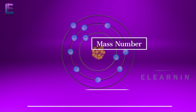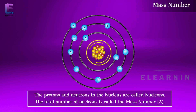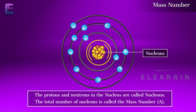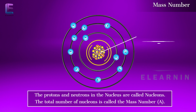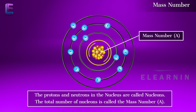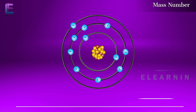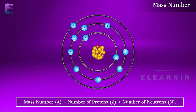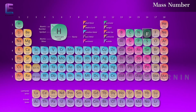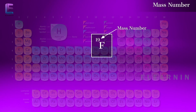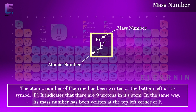Mass number: the protons and neutrons in the nucleus are called nucleons. The total number of nucleons is called the mass number A. Mass number A equals the number of protons Z plus the number of neutrons N. For example, the mass number of fluorine is 19 and the atomic number is 9.